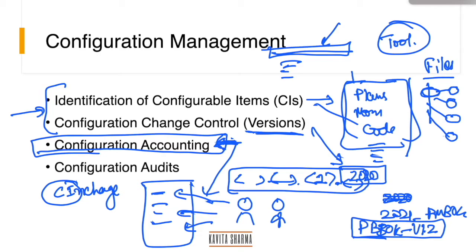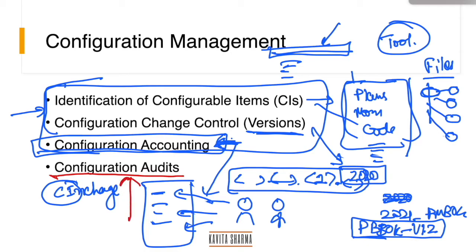So this is accounting wherein I know who has what access, how many CIs are there and so on. Now this is a normal process, it should go on, but management wants to also know whether the right access is given to right people or not.